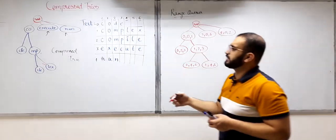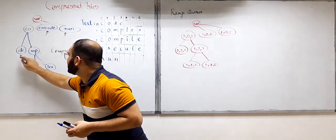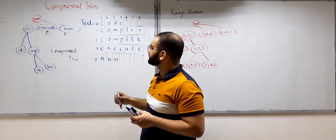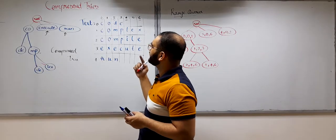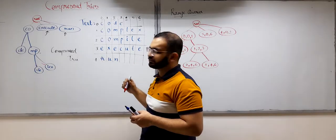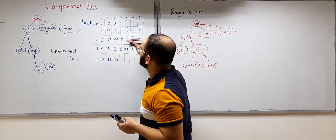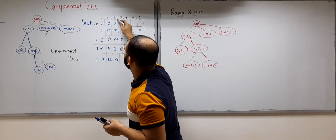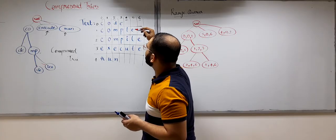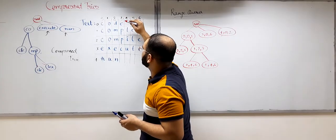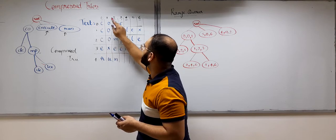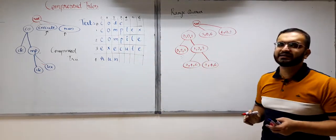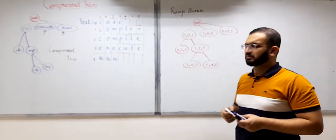Let us verify another example. DE appears in the word at index 0. The starting index of DE is 2 and the ending index is 3, so DE is represented as 0, 2, 3. You can cross-check all these numbers in the same way for every node in the compressed try.